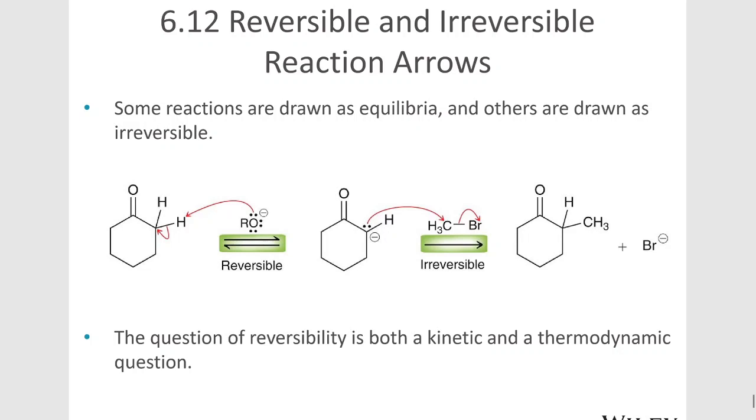For example, in this mechanism, we have a reversible arrow on the first step because the hydrogen can be removed, and then it can also be picked back up and go back onto that carbon. So that equilibrium doesn't fully favor products.